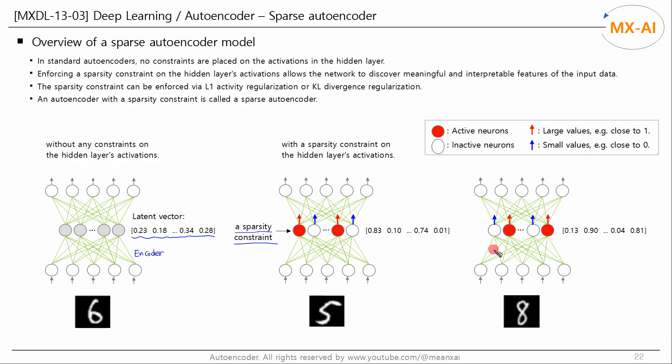The two models on the right are examples of autoencoders with a sparsity constraint. Only some neurons in this layer are activated while the rest are inactivated. An activated neuron outputs a value closer to 1 and an inactive neuron outputs a value closer to 0. In this example, the red neurons are active and the white neurons are inactive.